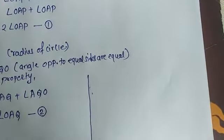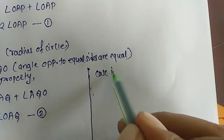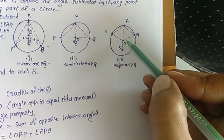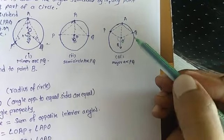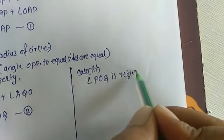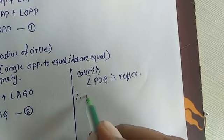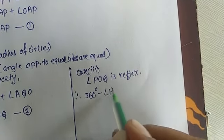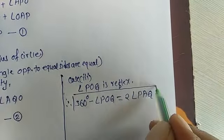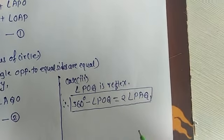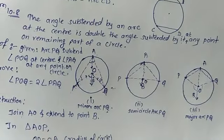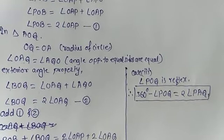For Case 3, angle POQ is a reflex angle. Therefore, we write 360 degrees minus angle POQ equals twice angle PAQ. This completes the proof of Theorem 10.8. Please write it properly.